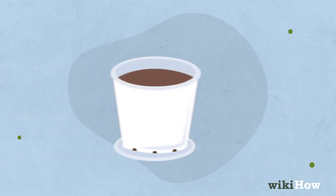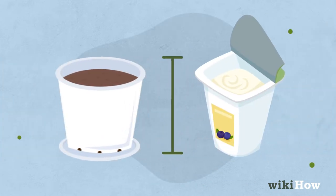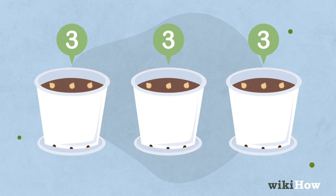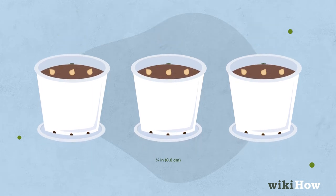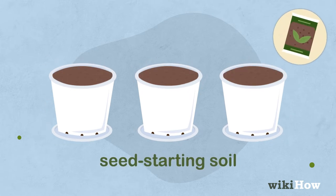Start the seeds in small pots about the size of a yogurt cup and put 3 seeds in each pot. Plant them about 1 quarter inch, 0.6 centimeters deep in well-drained seed-starting soil.